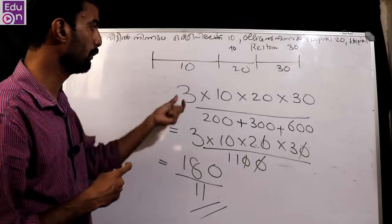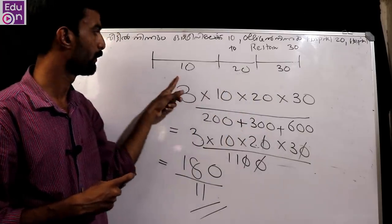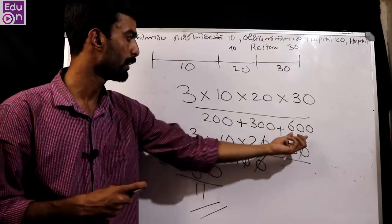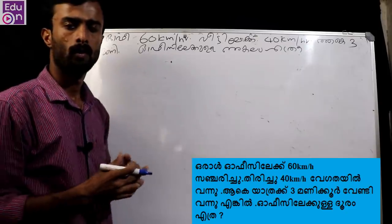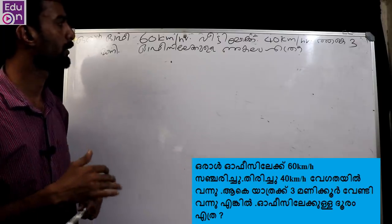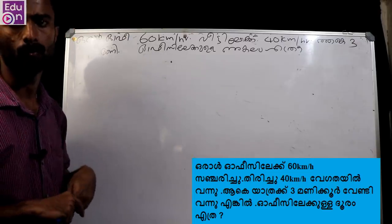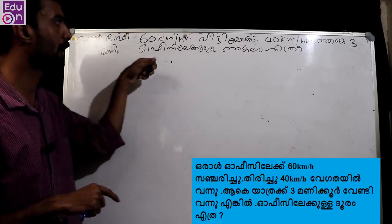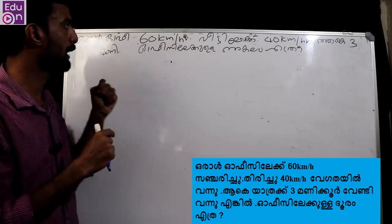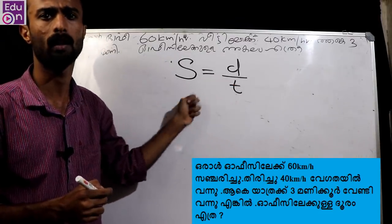We have to multiply. All together, to understand the same number — the number is possible at the same time. The speed is equal to distance by time.